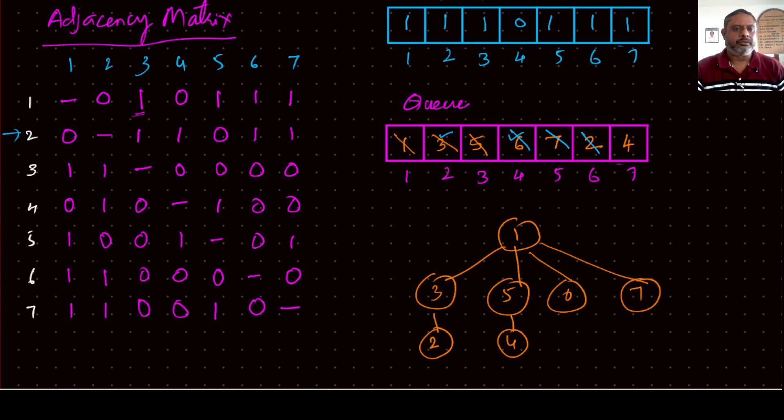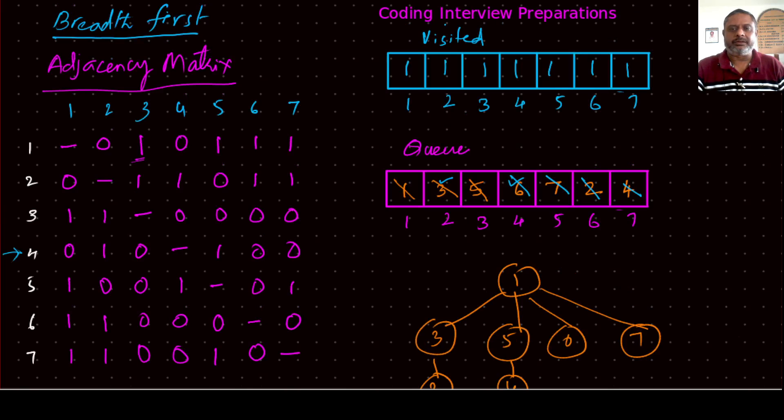And now we have four, so go to row four, and see can we add anything new. So the next one is two, two is already visited, then we have five, five is already visited, so nothing more to add from this. We have to dequeue four, and we don't have anything left, because nothing got added to the queue, and all elements whichever were added are dequeued. And if you look at the visited thing, it says that all nodes of your graph have been visited.